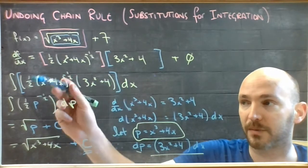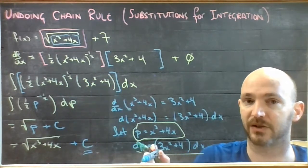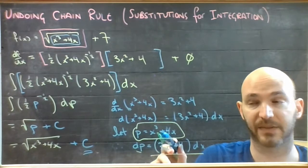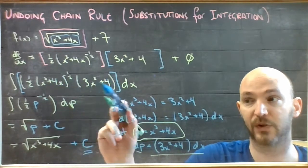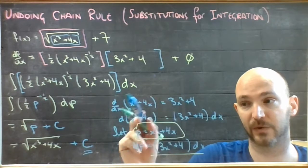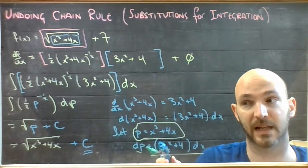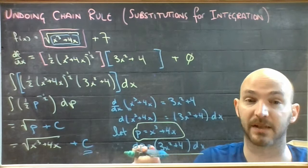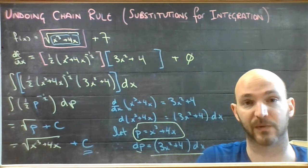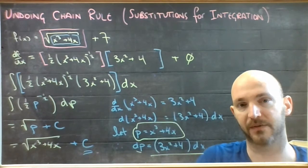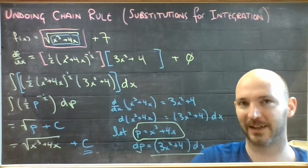If you look at a complicated integral and you see two pieces multiplying each other, ask yourself: is this the derivative of that, or is this the derivative of that? If you can identify that, you just execute a substitution, and 9 times out of 10 it's going to render it down into something simple that you can just write the answer for.